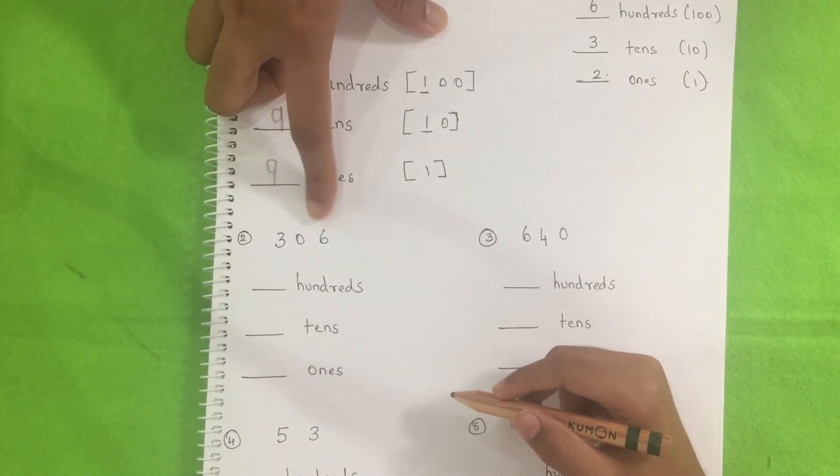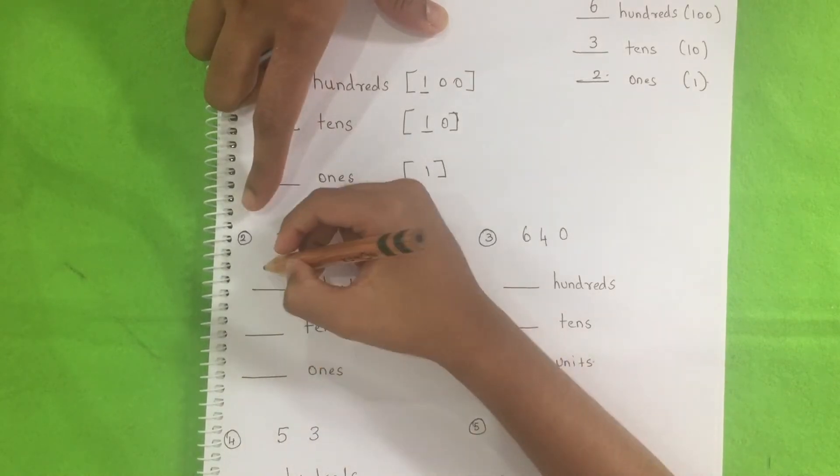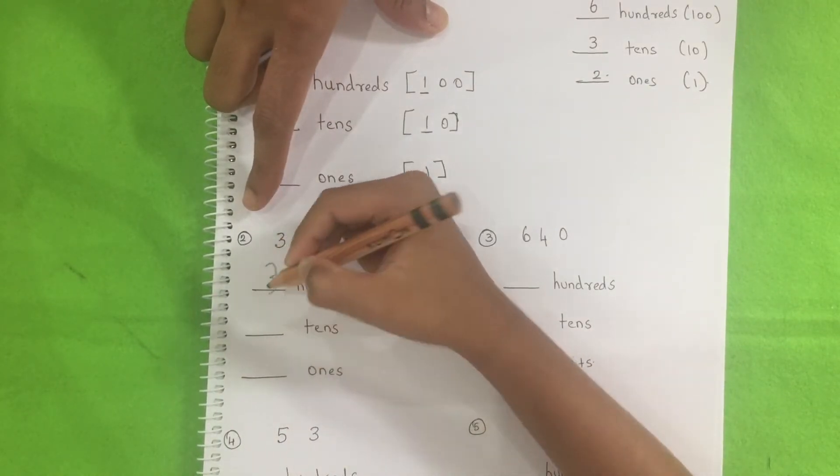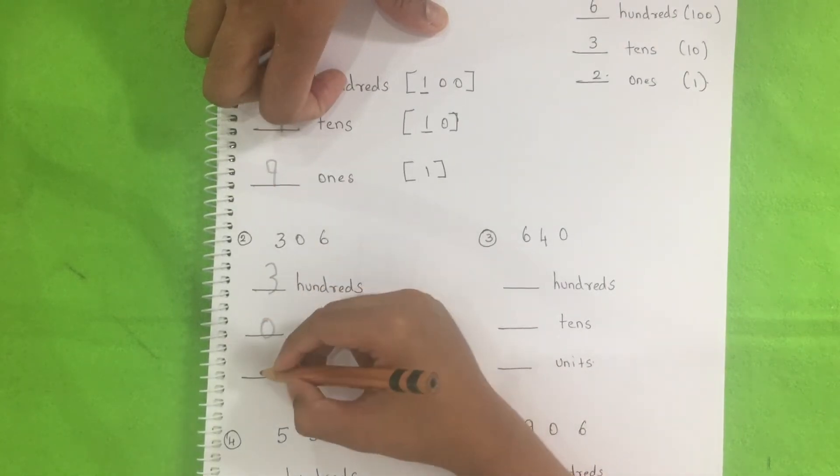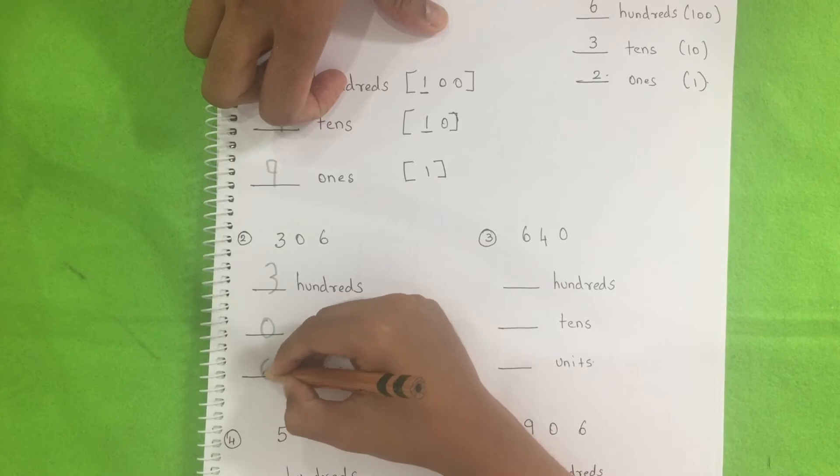Can you read the number? Three hundred and six. So hundreds place three and tens place zero. Ones place six.